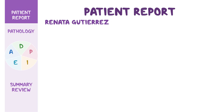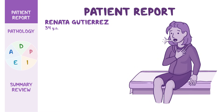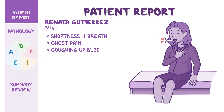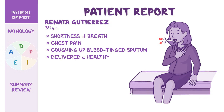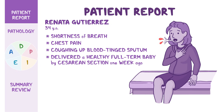Renata Gutierrez is a 34-year-old woman who came to the emergency department, or ED, with her partner because of shortness of breath, chest pain, and coughing up blood-tinged sputum. The triage nurse informs you that Ms. Gutierrez delivered a healthy, full-term baby by cesarean section one week ago. She has no other significant past medical history.